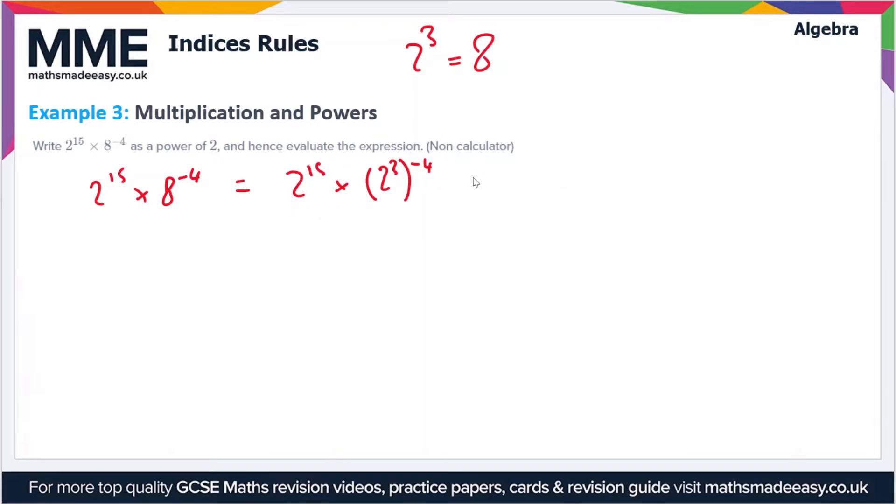or powers and roots rules—if you've not seen the powers and roots video then I recommend you watch that—but this is an example of the multiplication law. So this expression is equal to 2^15 × 2^(3×-4). We multiply the powers in this case, which gives us 2^15 × 2^(-12).